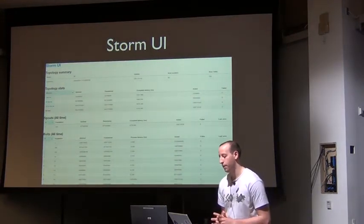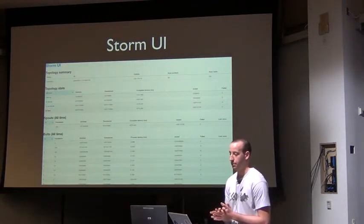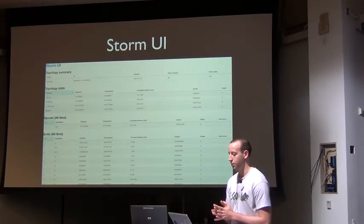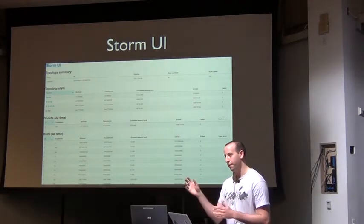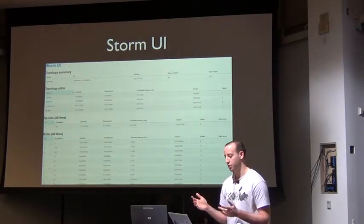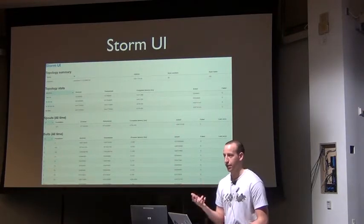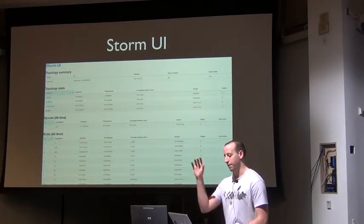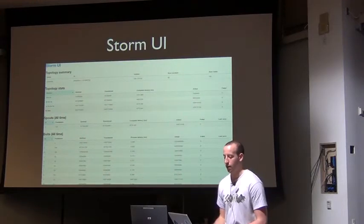Storm has a UI very similar to Hadoop's UI. It lets you see what topologies are running in the cluster and gives you very fine-grained metrics of the processing — things like average latency for a spout tuple to be completed, average latency for every bolt, and the ability to dig in on an individual stream and task basis.